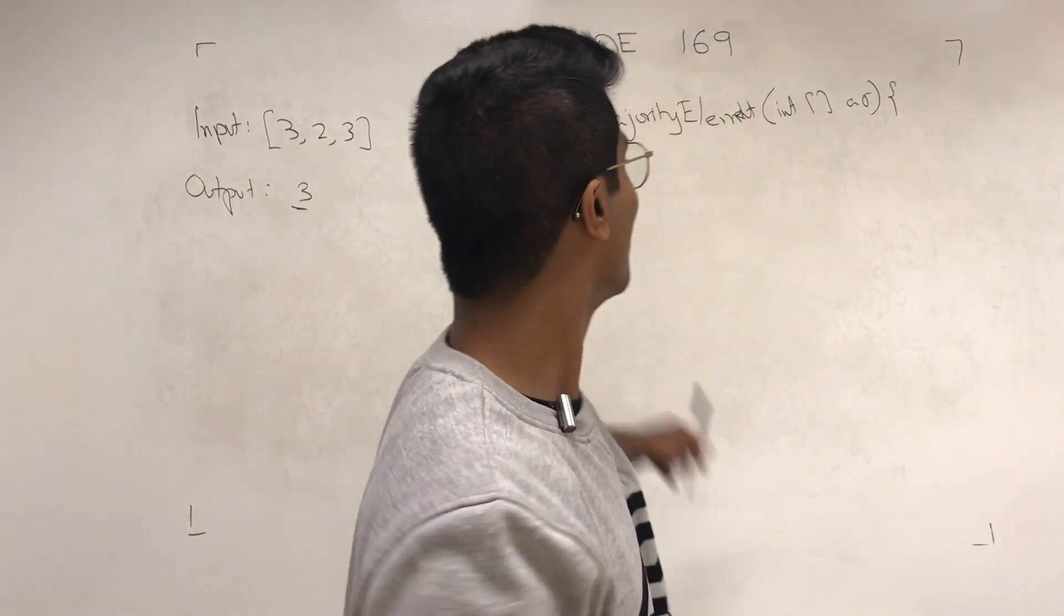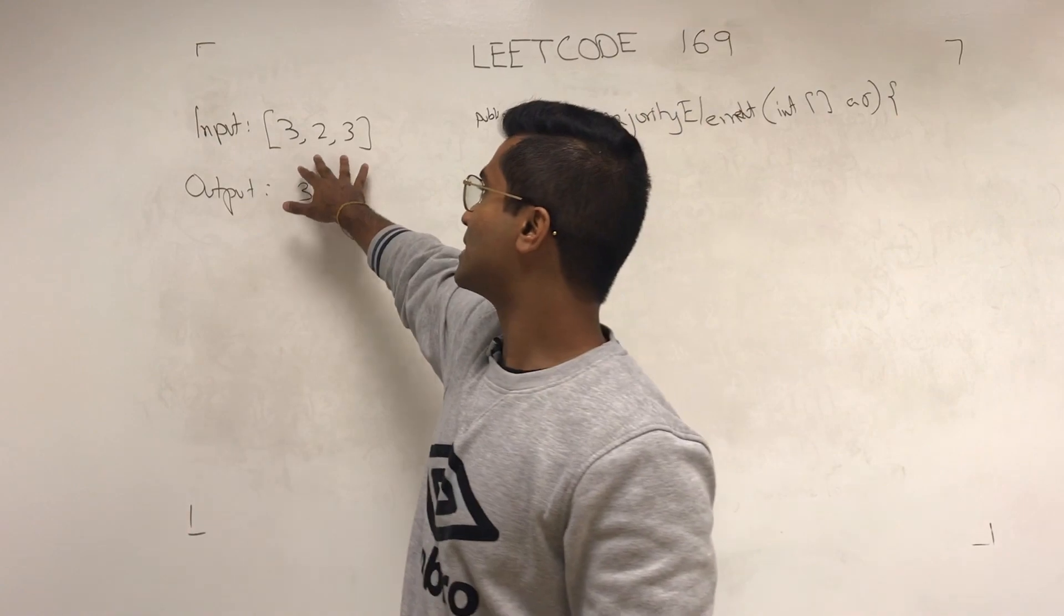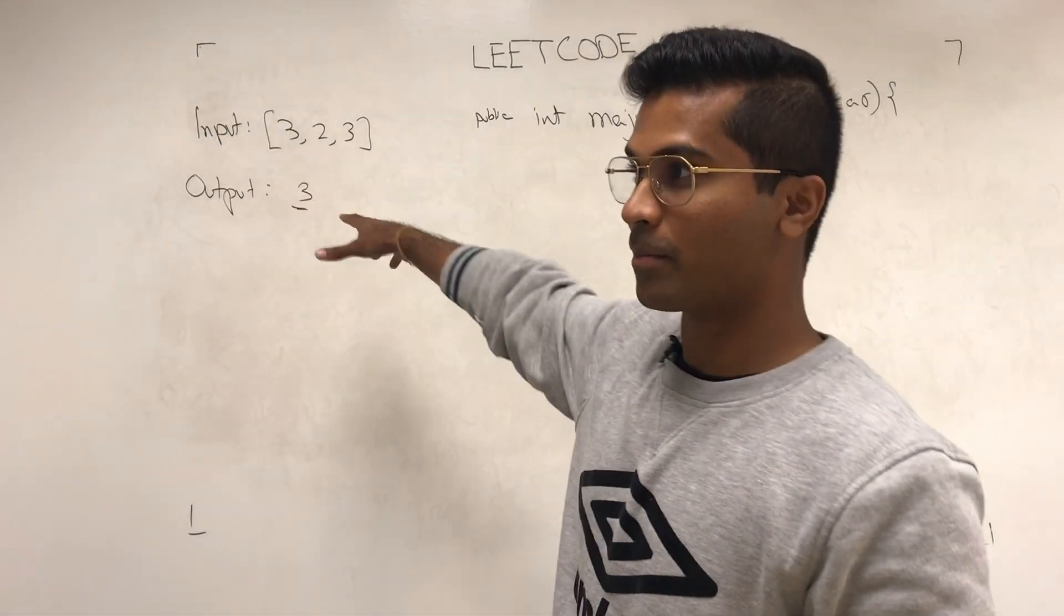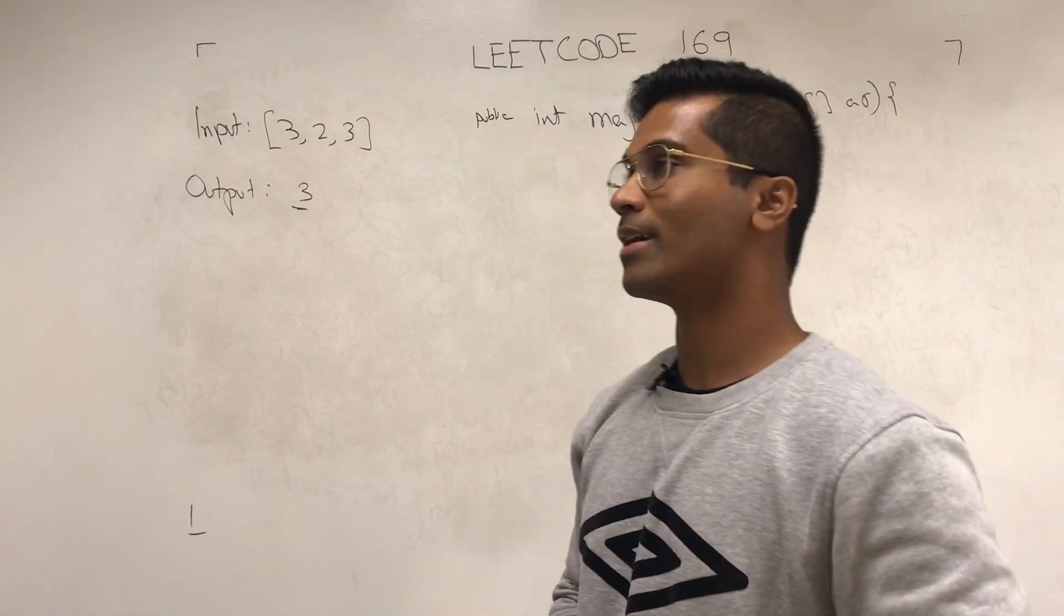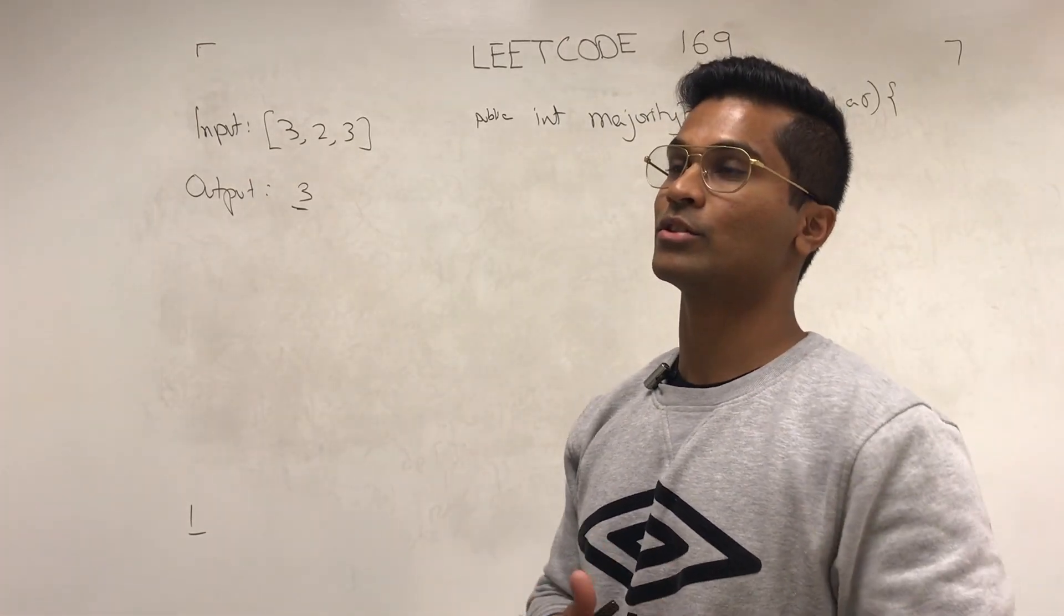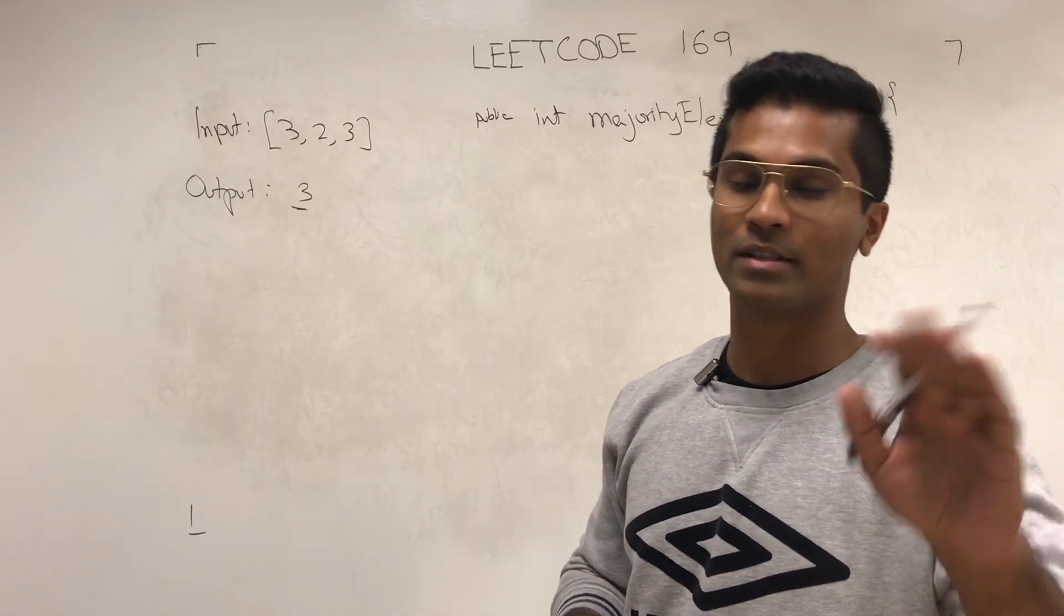Hey everyone. Today we're going to be going over LeetCode 169 Majority Element. The input is going to be some numbers in an array and we want the thing which occurs the most, and the most is considered anything which is greater than the length divided by two, the floor of. It's in the description.